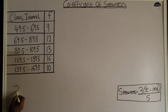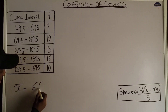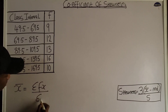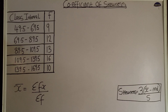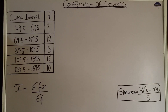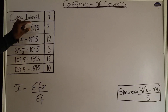The formula for mean is: x-bar equals summation fx all over summation f. Summation fx is the sum of the product of the frequency and the midpoint of the class interval. So from this formula I still need to get the midpoint of each class interval. To get the midpoint, I sum the upper class boundary and the lower class boundary together, then divide by two.